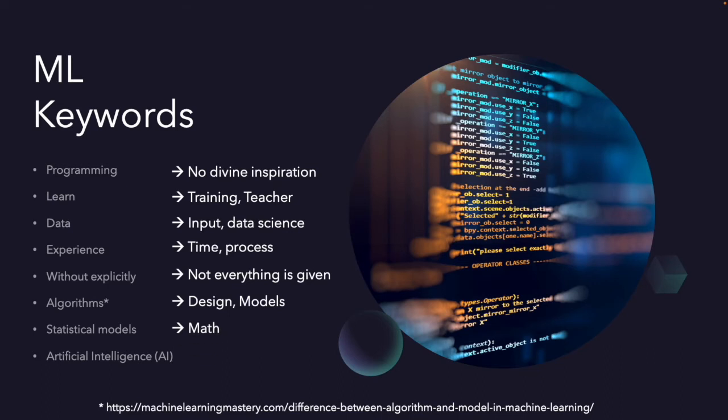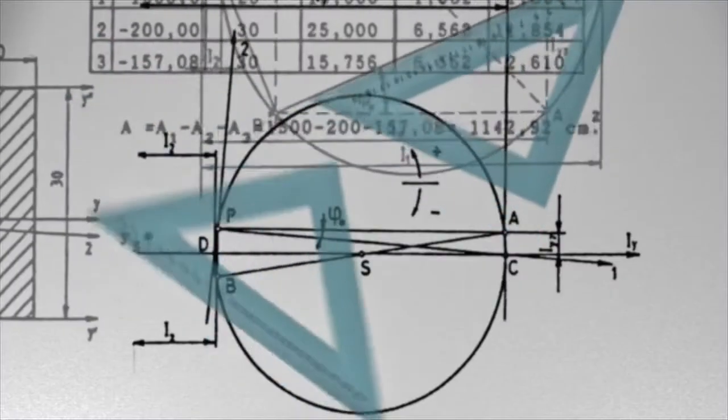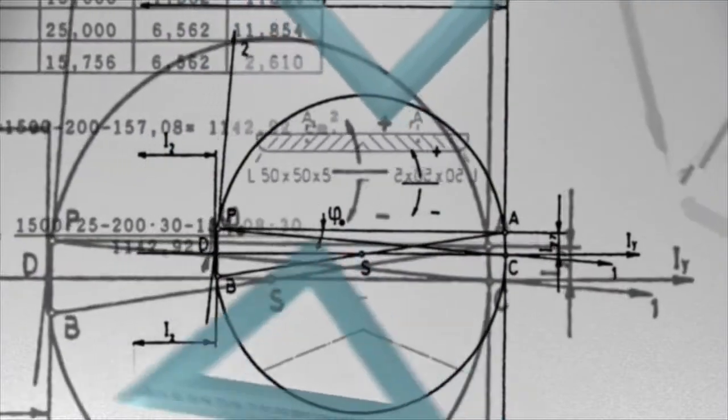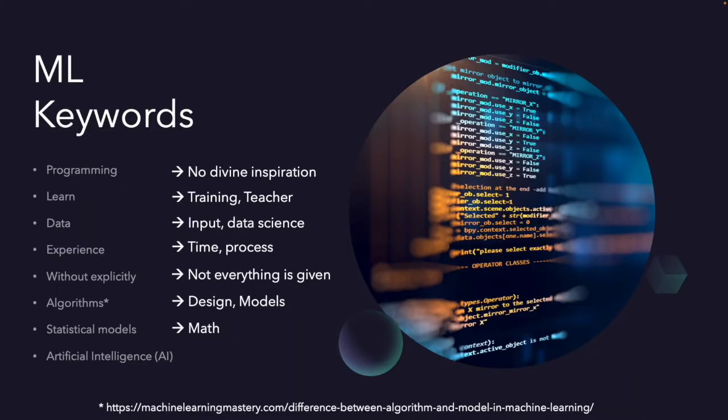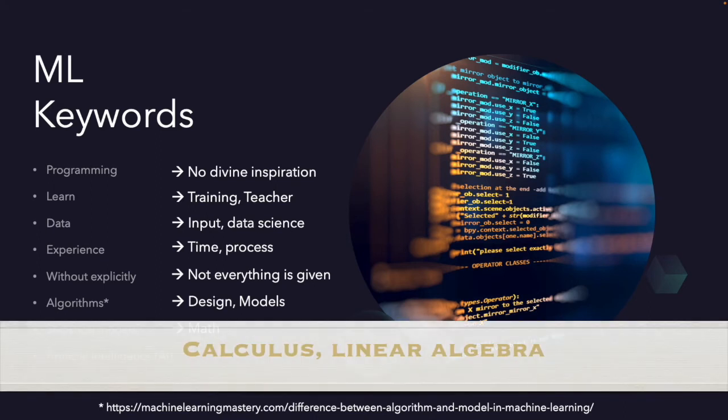And statistical models are also very important keywords in here because there is a math. If you want to learn data science techniques, machine learning algorithms, you should know at least college-level calculus, linear algebra, statistics, and probability.